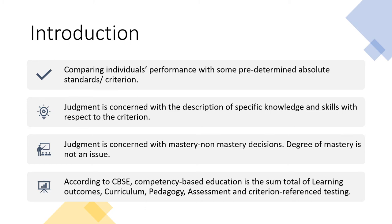We first establish the criterion and then compare the student's score against it. If the student's score meets or exceeds the criterion, it is mastery. If the student's competencies could not reach the level of the criterion, that is non-mastery. The degree of mastery is not an issue — it is simply mastery or non-mastery.